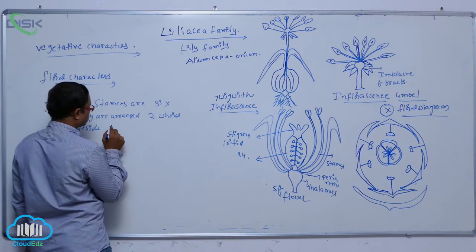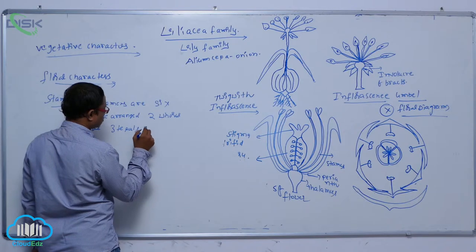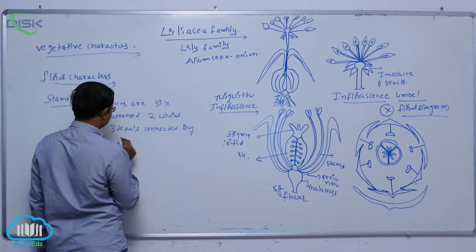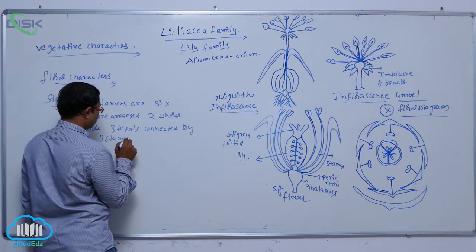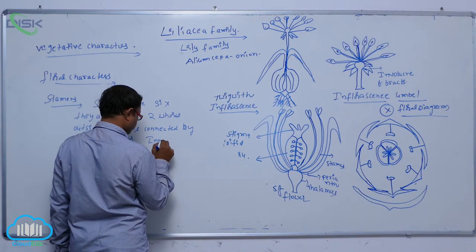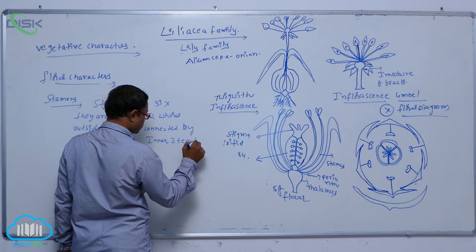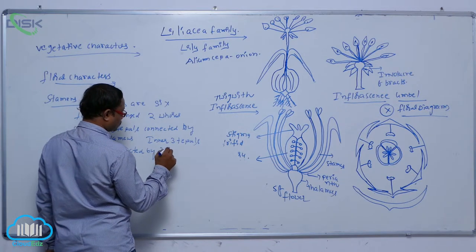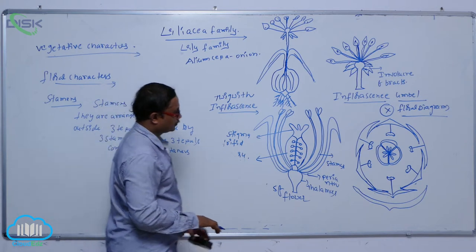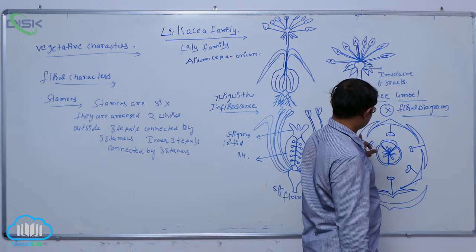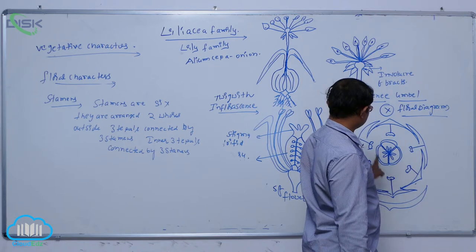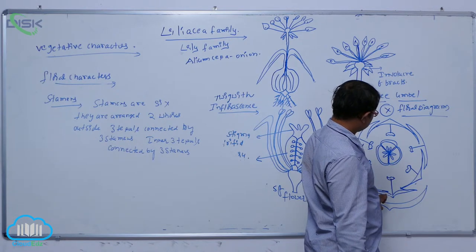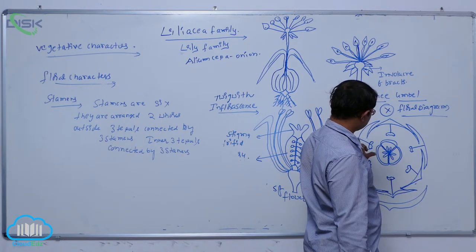Outside, three tepals are connected by three stamens, and inner three tepals are connected by three stamens. So outside, one, two, three — and inside, one, two, three. So three outer tepals are connected with three stamens, and three inner tepals are connected to three stamens.